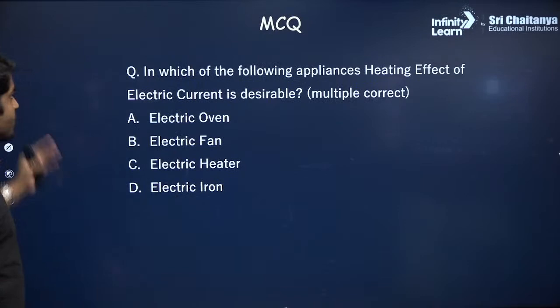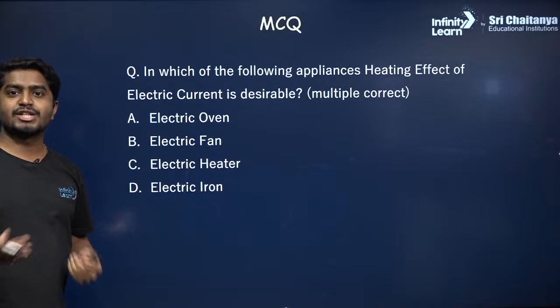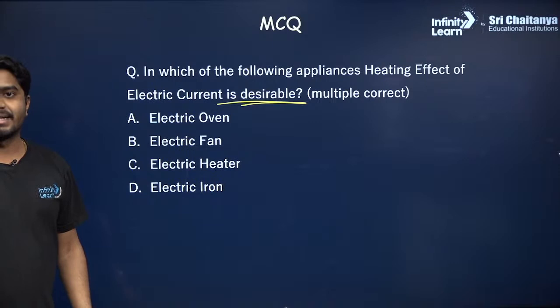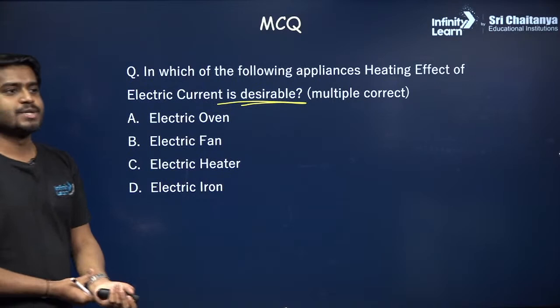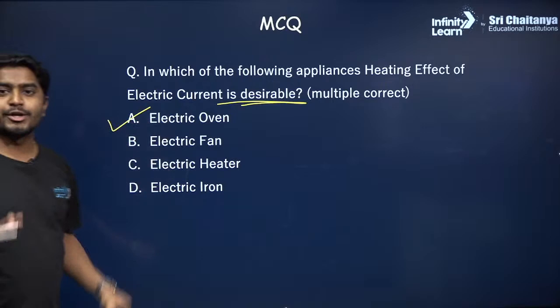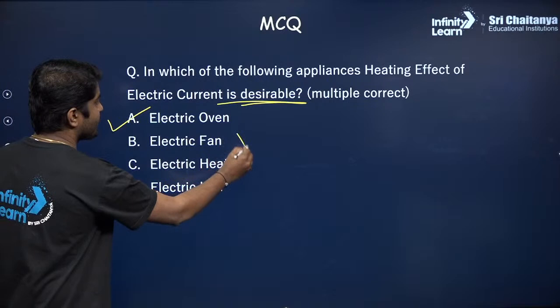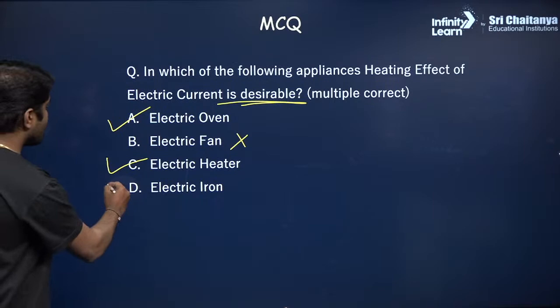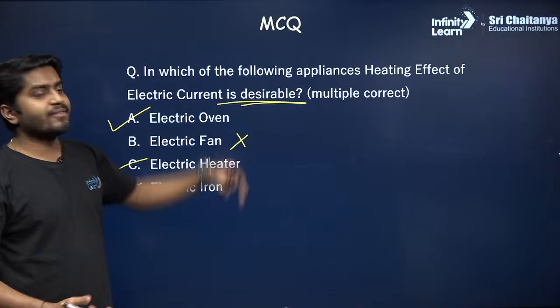Solve this question: In which of the following appliances is the heating effect desirable? Options are electric oven, electric fan, electric heater, and electric iron. The answer is electric oven (A), electric heater (C), and electric iron (D) — we want these to become hot. We do not want the electric fan to become hot, so B is not correct.